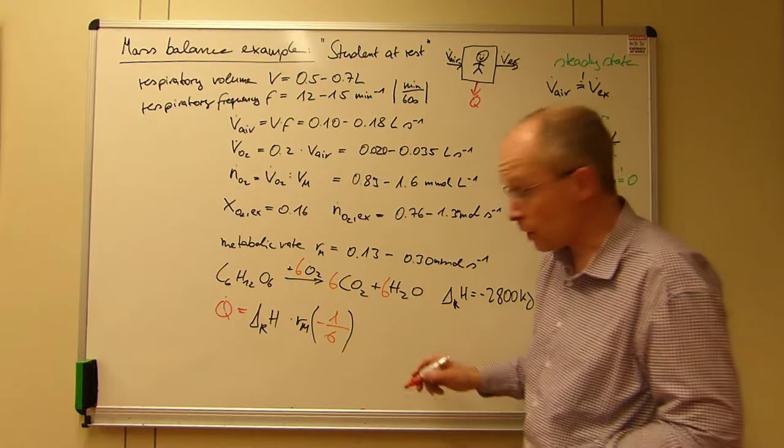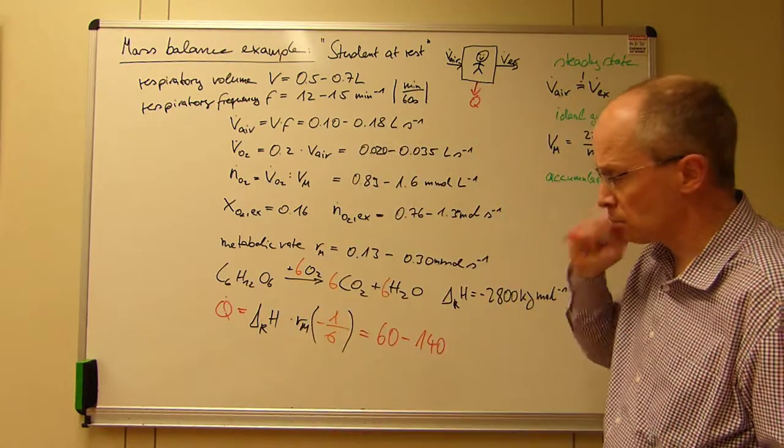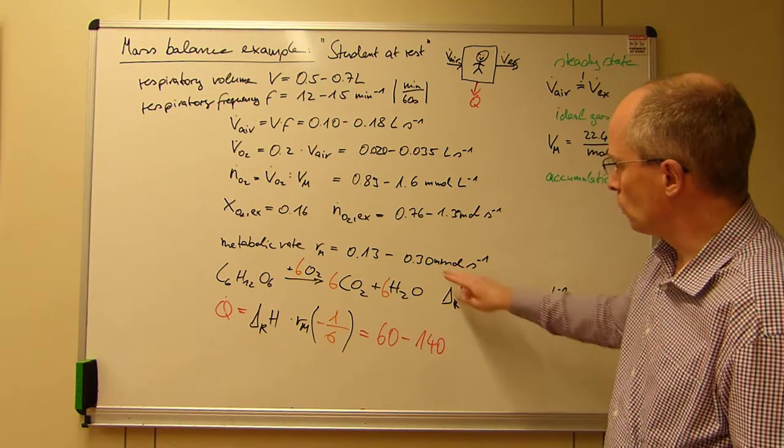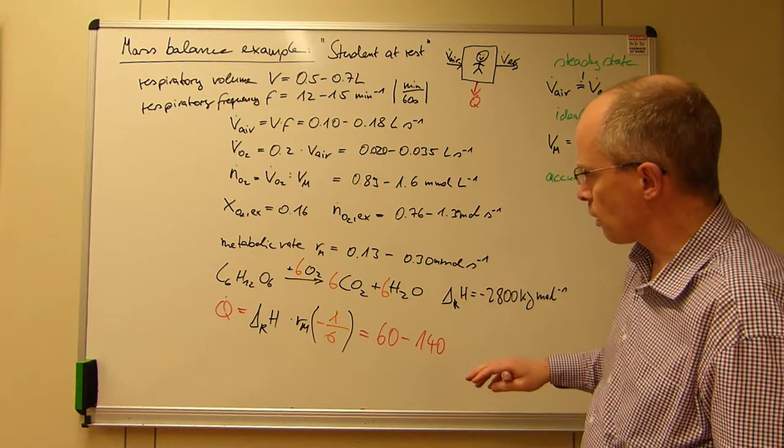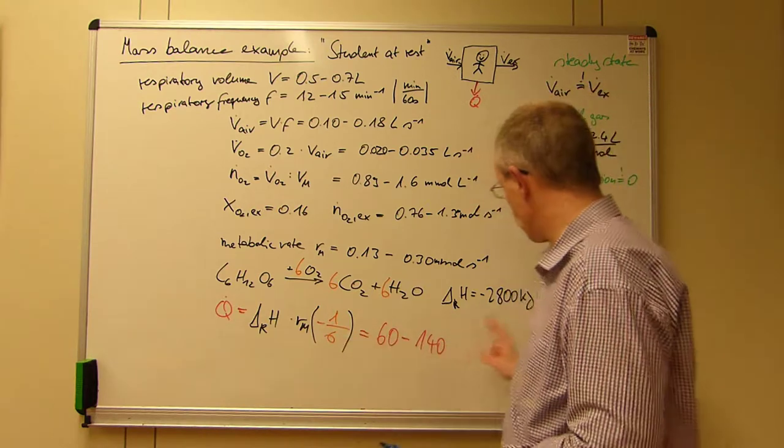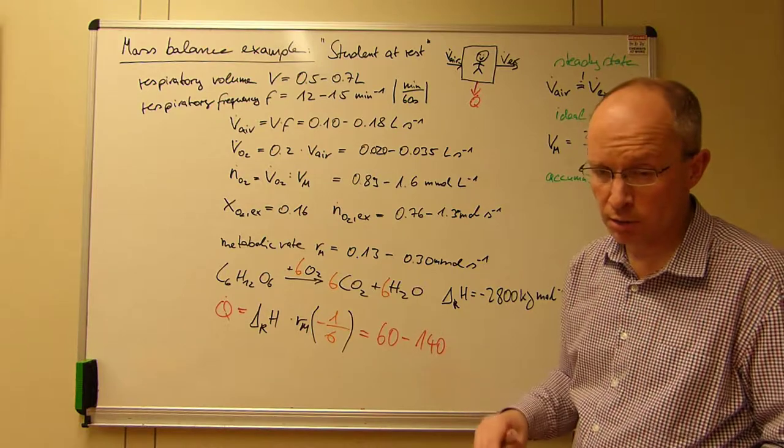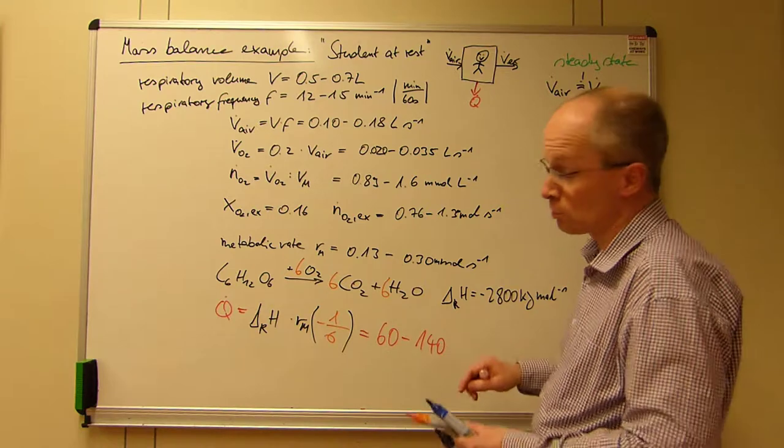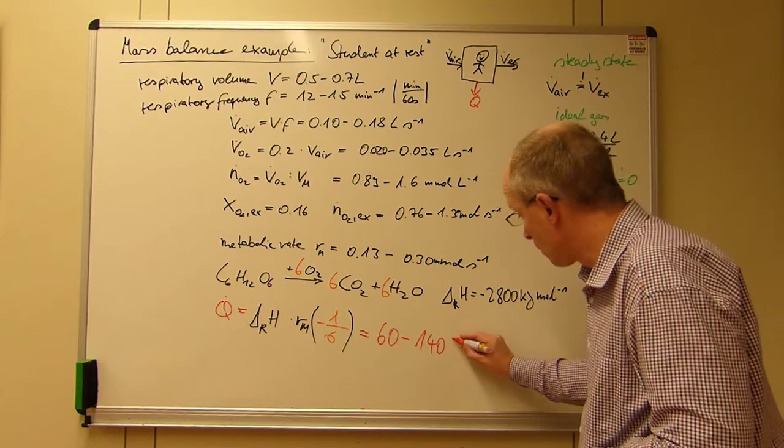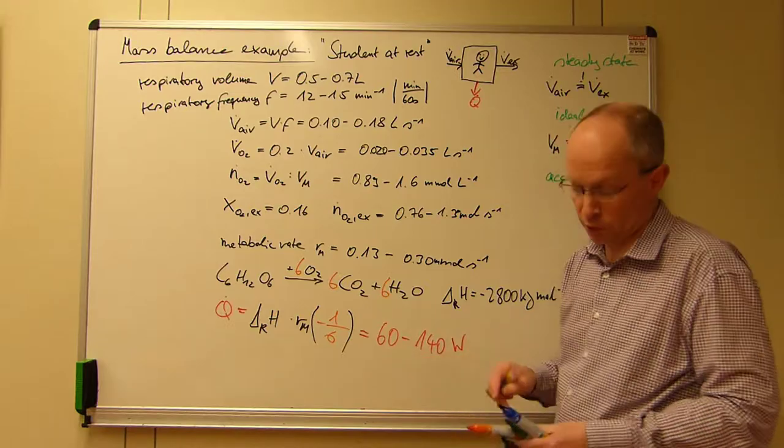Okay, what does this give us? You can check the units of course of that. We have millimoles here, we have kilojoules here. So this all balances out somehow. In the end you get all the kilojoules. We get, yeah, as heat generated. I hope you trust me on that, but check it better, because this may be wrong. And we get a range of 60 to 140 watts.